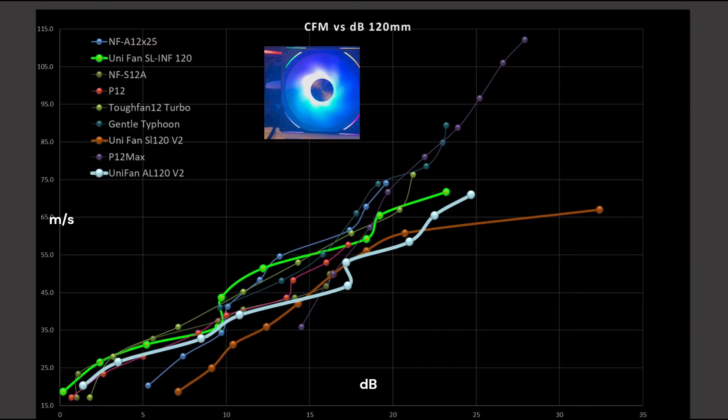Now, how does the graph look, CFM versus decibel rating? Well, here it is. The Unifan AL120 version 2 is sitting kind of towards the bottom end of this graph. So it is a bit on the noisy side for how much performance you're getting to determine if its performance is worth it or not.